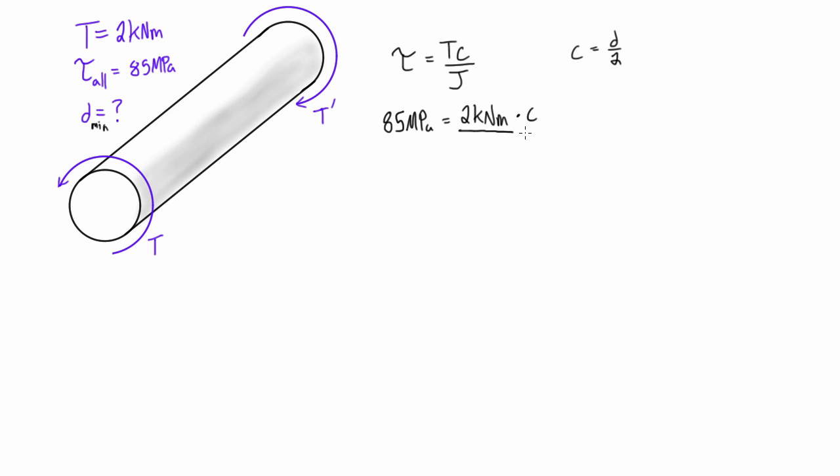And we don't know what c is yet, so c is going to be our unknown. And the equation for the polar moment of inertia for a solid rod, if you remember, is just π over 2 times the radius to the power of four, when the radius is in meters. So we get π over 2 times c to the power of four.